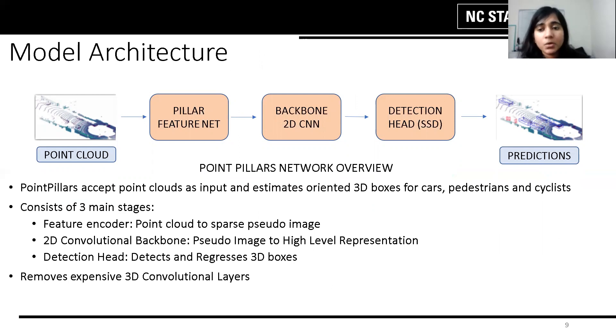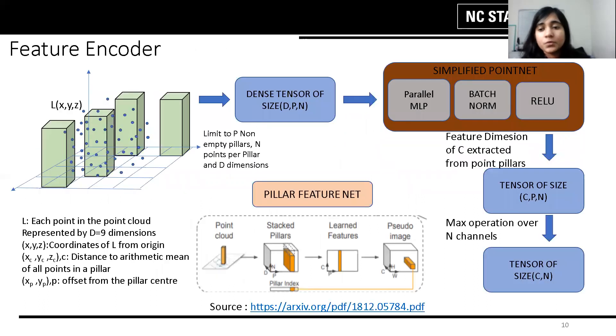This outputs bounding boxes and class scores for classification of cars, pedestrians and cyclists. In this way, it also eliminates the problem of dealing with expensive 3D convolution layers. Now I will hand over to Adarsh to explain the different components of the point pillar architecture.